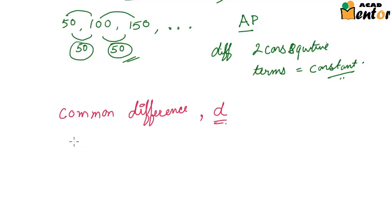Now this common difference for any AP can either be positive, it could be negative, or it could be zero. When the common difference d is positive, we see that the terms of the AP go on increasing. For example, say the common difference d is 5, positive 5, and the first term of the AP is 1, then the next term would be 1 plus 5, that is 6, and the following term would be 6 plus 5, that is 11, and the next term would be 11 plus 5 or 16 and it goes on.